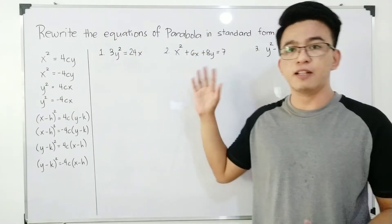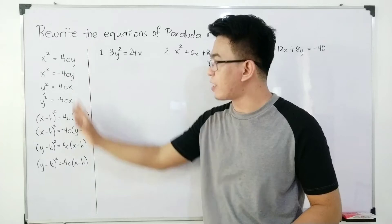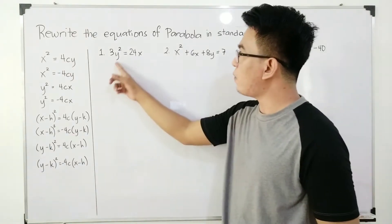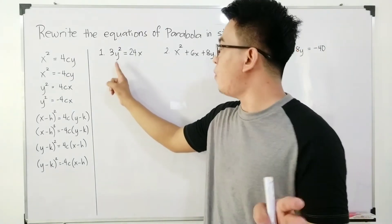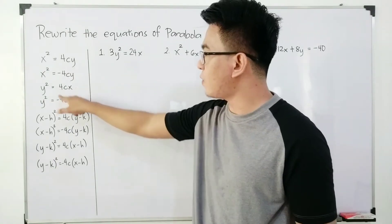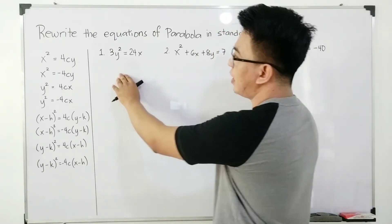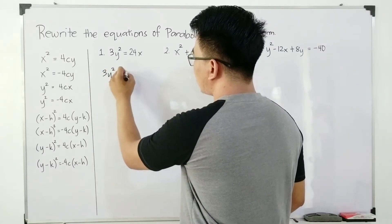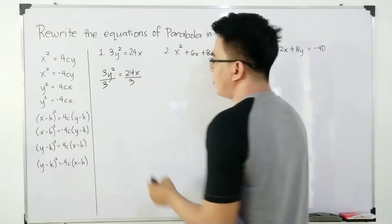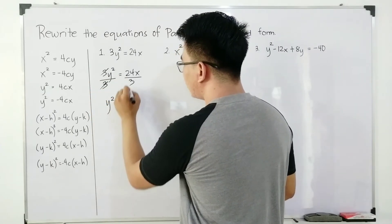Let's have here the examples. We write the equations of parabola in standard form. Our target here is to transform these three equations into standard form. For number 1, we have 3y² = 24x. As you can see, the exponent of 2 is in the y variable, so we target the form y² = 4cx. All we need to do is divide this equation by 3 to eliminate the 3.